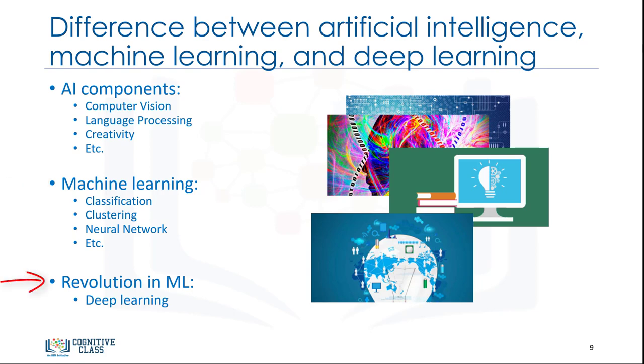And deep learning is a very special field of machine learning, where computers can actually learn and make intelligent decisions on their own. Deep learning involves a deeper level of automation in comparison with most machine learning algorithms.